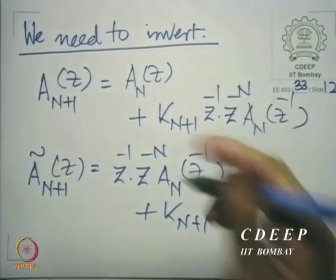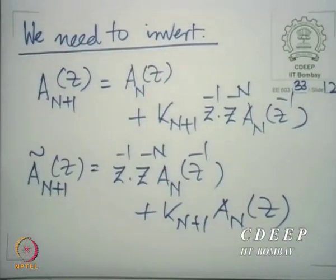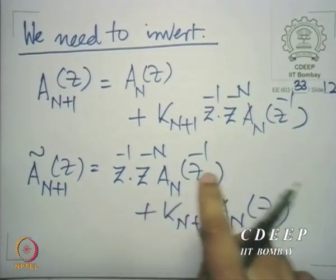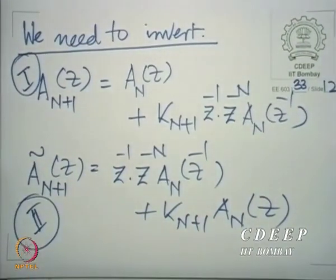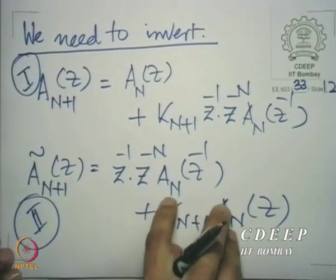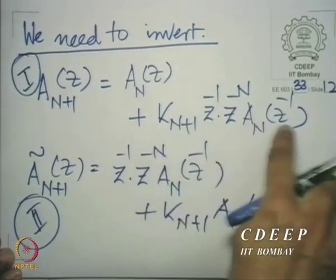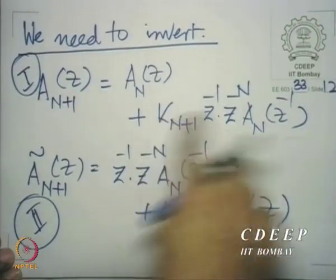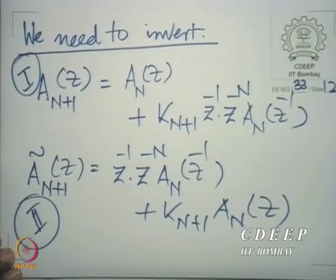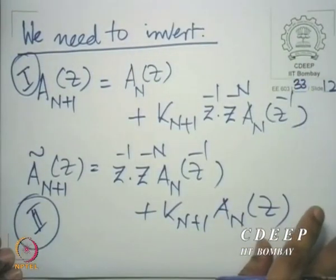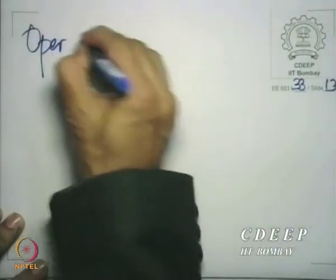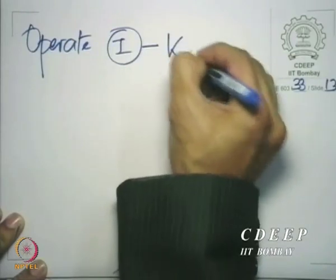What we want to do is to get a_n from a_{n+1}. We need to invert this. That is very easy to do. Let me call the first relationship equation 1 and the second relationship equation 2. I can try and get rid of the a_n(z^{-1}) term. That is very easy to do — I can just subtract k_{n+1} times equation 2 from equation 1. All that I need to do is to operate: equation 1 minus k_{n+1} times equation 2.